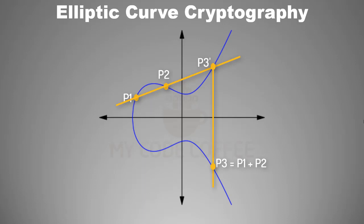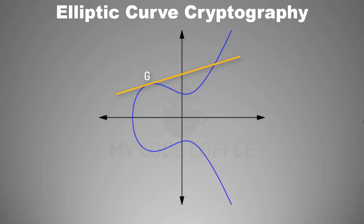Now if p1 and p2 are the same point, your line becomes a tangent to that point. Let us refer to this point as g. In this case, the tangent will cut the curve at a point, and you get the reflection of that point by dropping a perpendicular line on the x-axis and seeing where this line cuts the curve. This new point is equal to g plus g, or 2g.